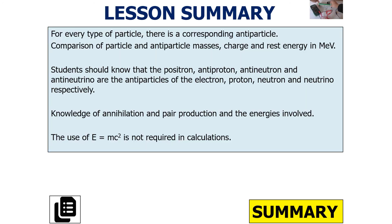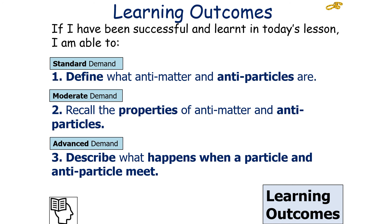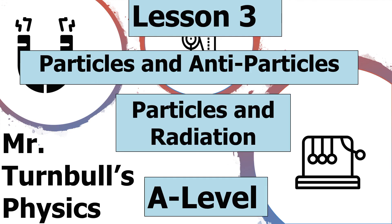To summarize today's lesson: for every type of particle there is a corresponding antiparticle, and you should be able to compare particle-antiparticle masses, charge, and rest energies. You should know that the positron, antiproton, antineutron, and antineutrino are the antiparticles of the electron, proton, neutron, and neutrino respectively. You should have knowledge of annihilation and pair production and the energies involved, and understand E = mc² as the underlying equation. I hope you've enjoyed today's lesson on particles and antiparticles in the particles and radiation section of AQA A-level physics. Thank you very much for listening, and have a lovely day.